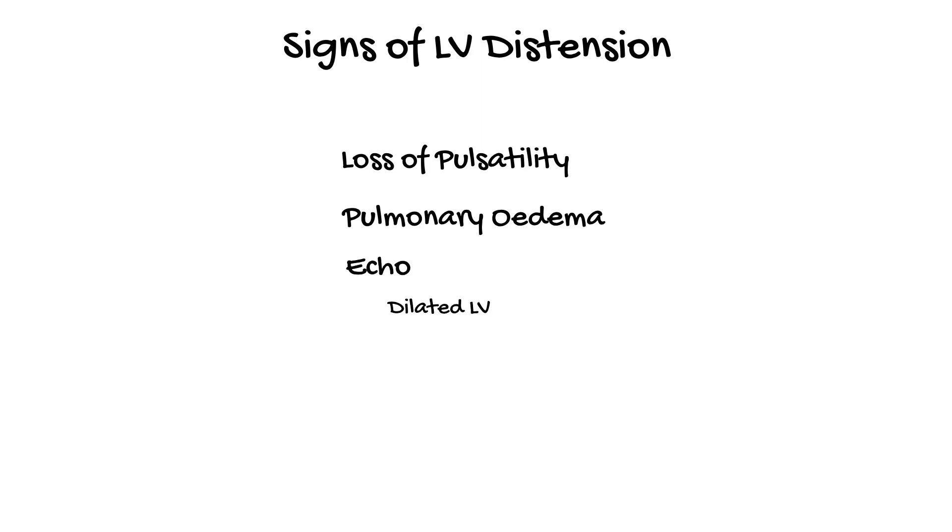Signs of left ventricular distension include a loss of arterial line pulsatility, a chest x-ray with pulmonary edema, or an echo with a dilated, poorly functioning left ventricle with an aortic valve that is not opening.